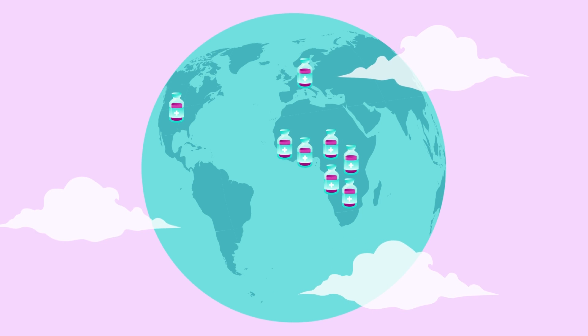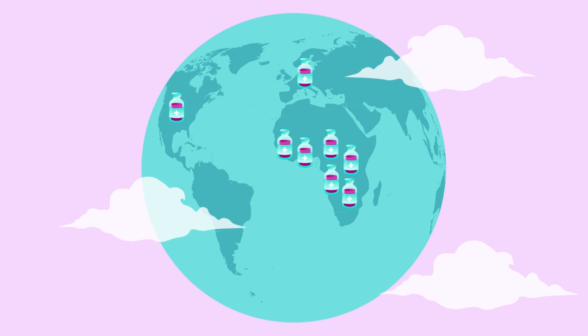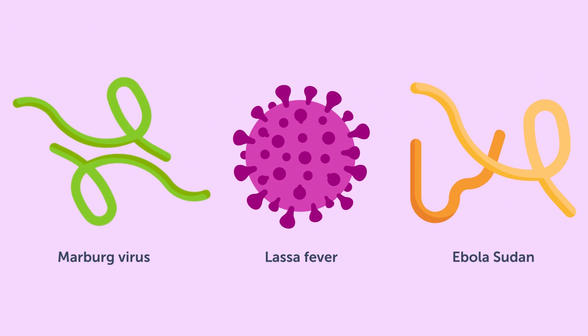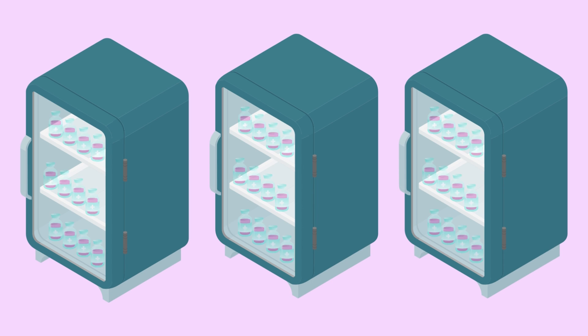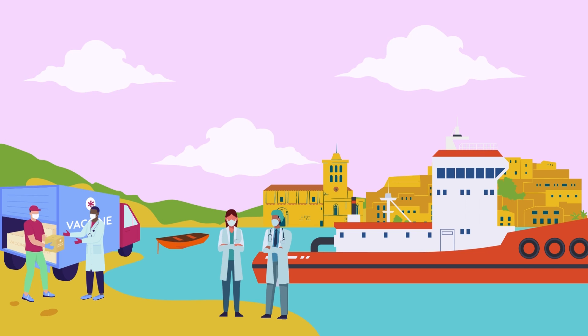VSV is the same platform technology that IAVI and our collaborators are using to develop vaccines to other hemorrhagic fever viruses, such as Marburg, Lhasa, and Ebola Sudan. IAVI's ultimate goal is to develop, stockpile, and license VSV vaccines to prevent disease outbreaks, or even to address outbreaks as they occur.